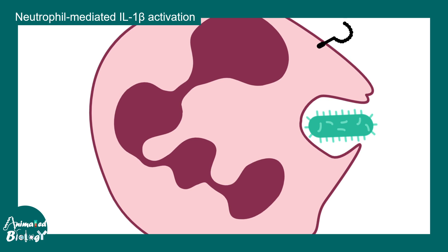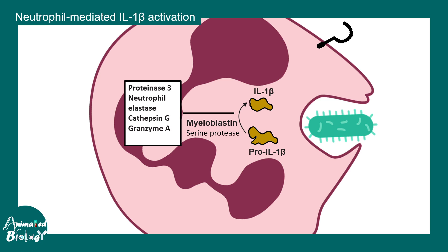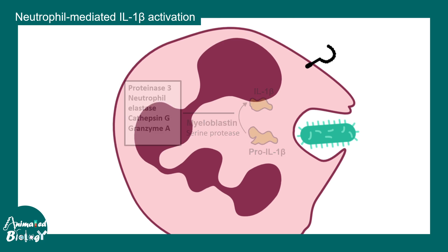Inside neutrophils, things work similarly but also differently. The pro-interleukin 1 gets converted into interleukin 1 with the help of myeloblastin, a serine protease. Other components such as neutrophil elastase, cathepsin G, and granzyme are also capable of converting pro-interleukin 1 to interleukin 1. So neutrophil-mediated interleukin 1 beta activation is a bit different from inflammasome-mediated activation, but the consequence is the same: secretion of interleukin 1 family proteins.